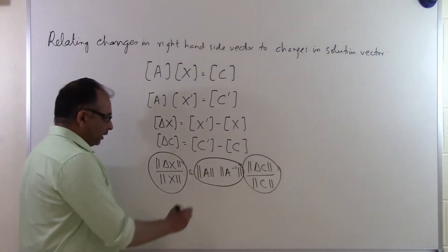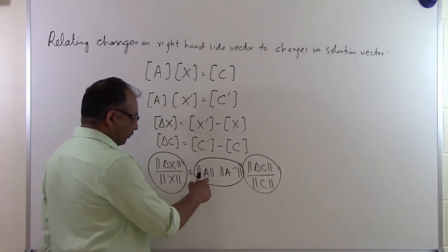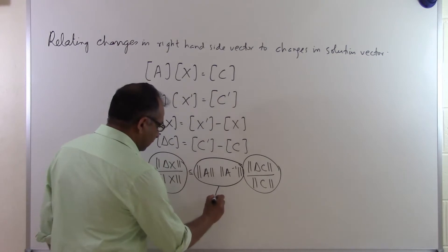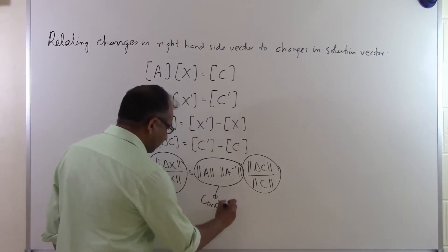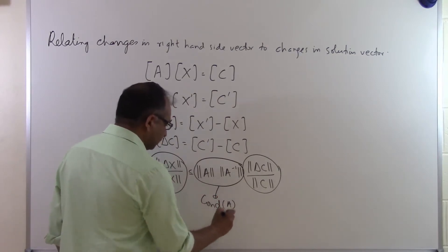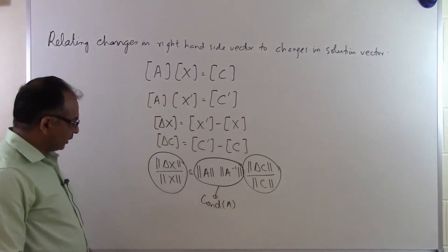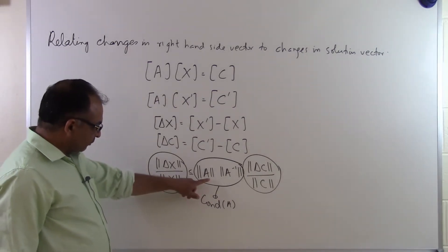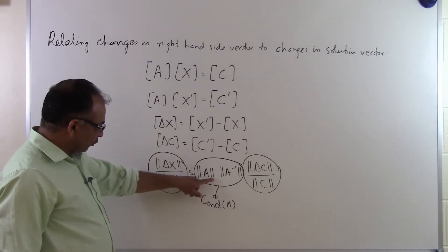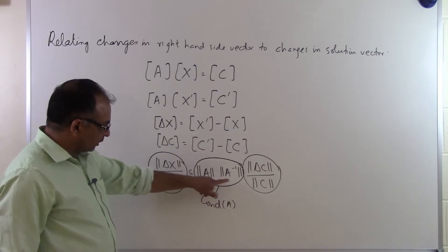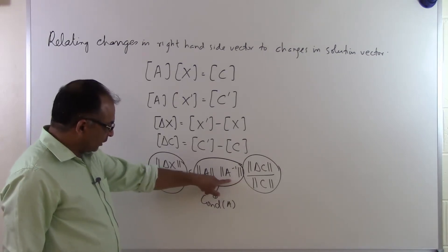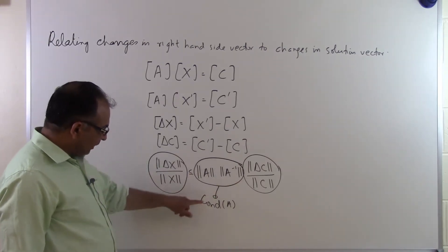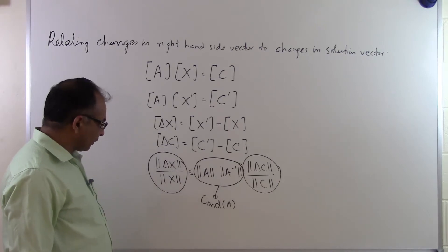That quantity — the norm of A times the norm of A inverse — is nothing but the condition number of the A matrix. So the condition number of A can be calculated by simply multiplying the norm of the coefficient matrix by the norm of the inverse of the coefficient matrix.